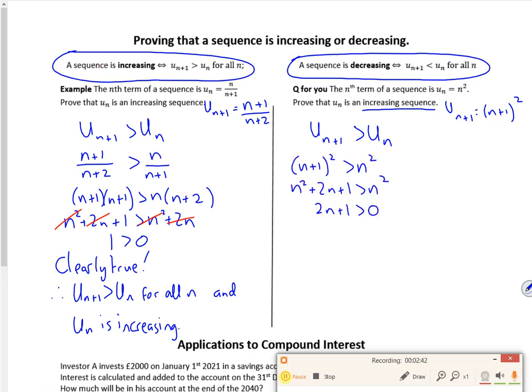Right, so that's what I've got to now. n is the number in the list, n is a positive integer. If that's the case, 2n has to be greater than 0. So 2n plus 1 must also be greater than 0. So therefore, my un plus 1 is greater than un for all n, and un is increasing. So that's quite nice.